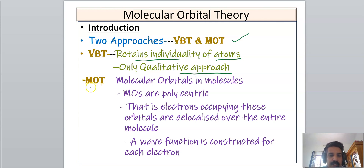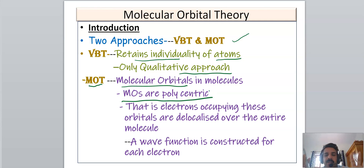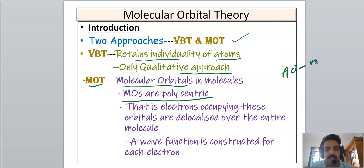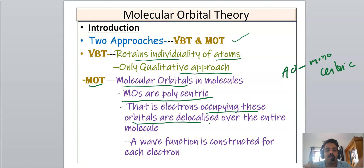In molecular orbital theory, new orbitals are formed for the molecules called molecular orbitals. Like atomic orbitals in atoms, molecules have molecular orbitals that are polycentric — they cover the entire molecule. Atomic orbitals are monocentric, belonging to only one atom, but molecular orbitals are polycentric, belonging to all atoms of the molecule. Therefore, electrons occupying these orbitals are delocalized over the entire molecule.